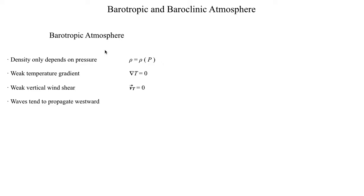Another interesting characteristic of a barotropic atmosphere is that cyclones or atmospheric disturbances tend to propagate from east to west. The barotropic atmosphere is usually found in the tropical region, between about zero and 30 degrees north in the northern hemisphere, and zero to 30 degrees south in the southern hemisphere, with some overlap between 20 and 40 degrees. For example, a tropical cyclone or hurricane, which exists in the tropics, usually moves in a westerly direction — it doesn't move west to east like a mid-latitude cyclone does.